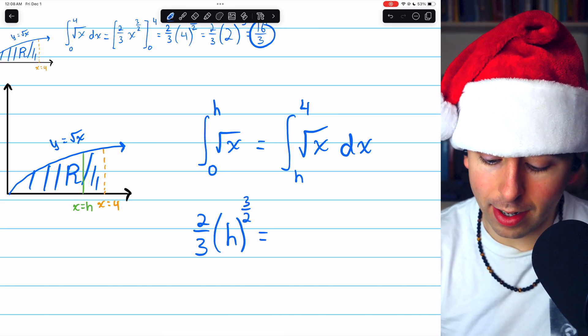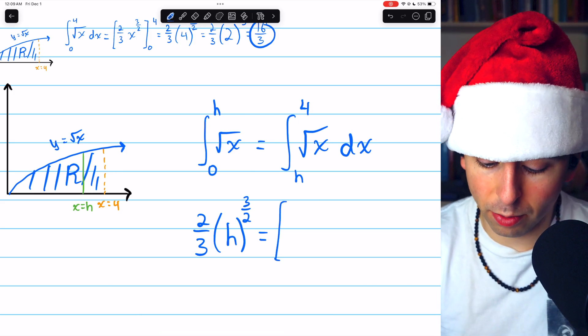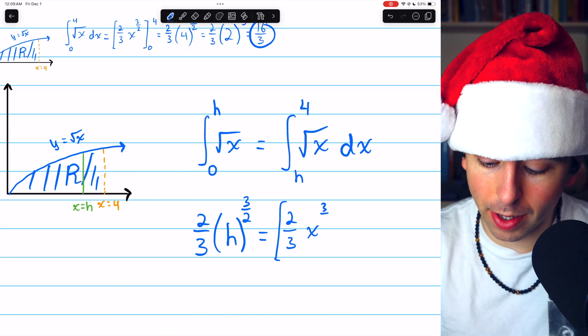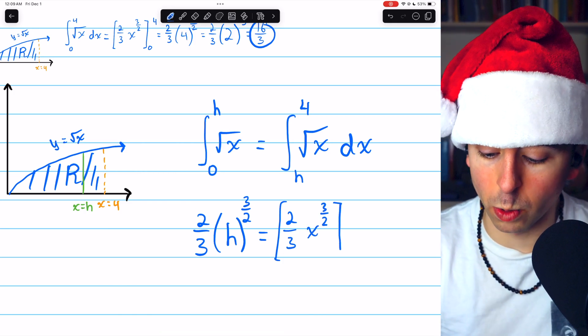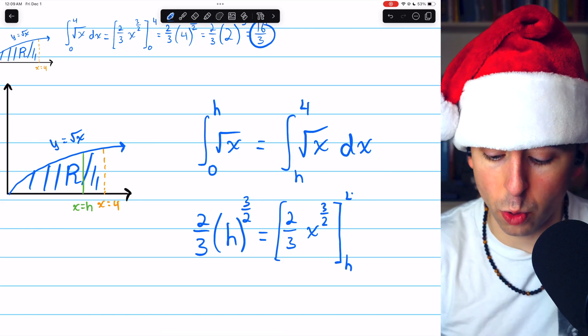Now on the right side, similar stuff will happen. We'll integrate the square root of X, which again becomes 2 thirds times X to the 3 halves, applying the reverse power rule, so to speak. And we're evaluating this from H to 4.